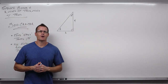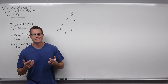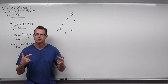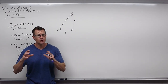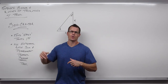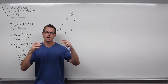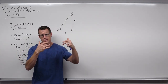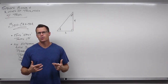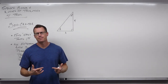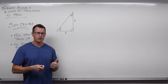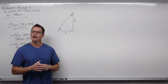The first thing about working with right triangle trigonometry is making sure you actually have a right triangle, because sine, cosine, and tangent — set up with SOHCAHTOA: sine is opposite over hypotenuse, cosine is adjacent over hypotenuse, tangent is opposite over adjacent — won't work without that being a right triangle. So if we have a right triangle, that's the number one thing we want to confirm.